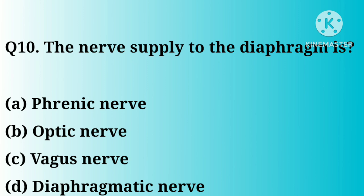Question number 10. The nerve supplied to the diaphragm is: Option A. Phrenic nerve. B. Optic nerve. C. Vagus nerve. D. Diaphragmatic nerve. Correct answer: Option A, Phrenic nerve.